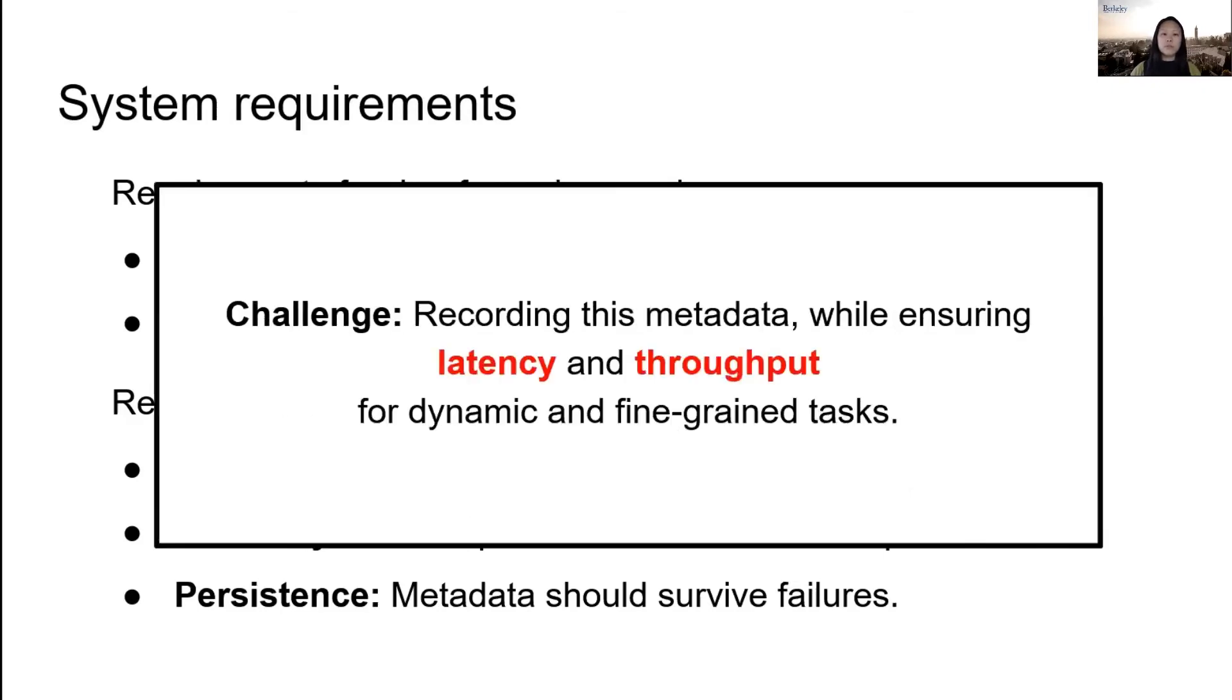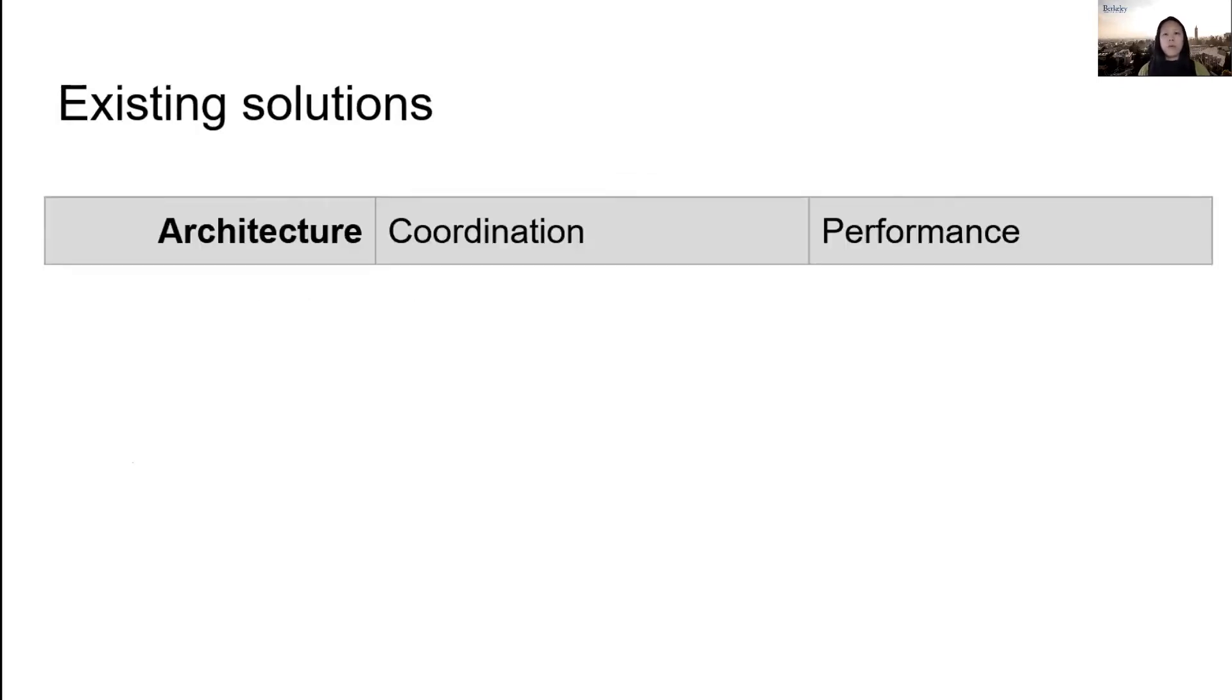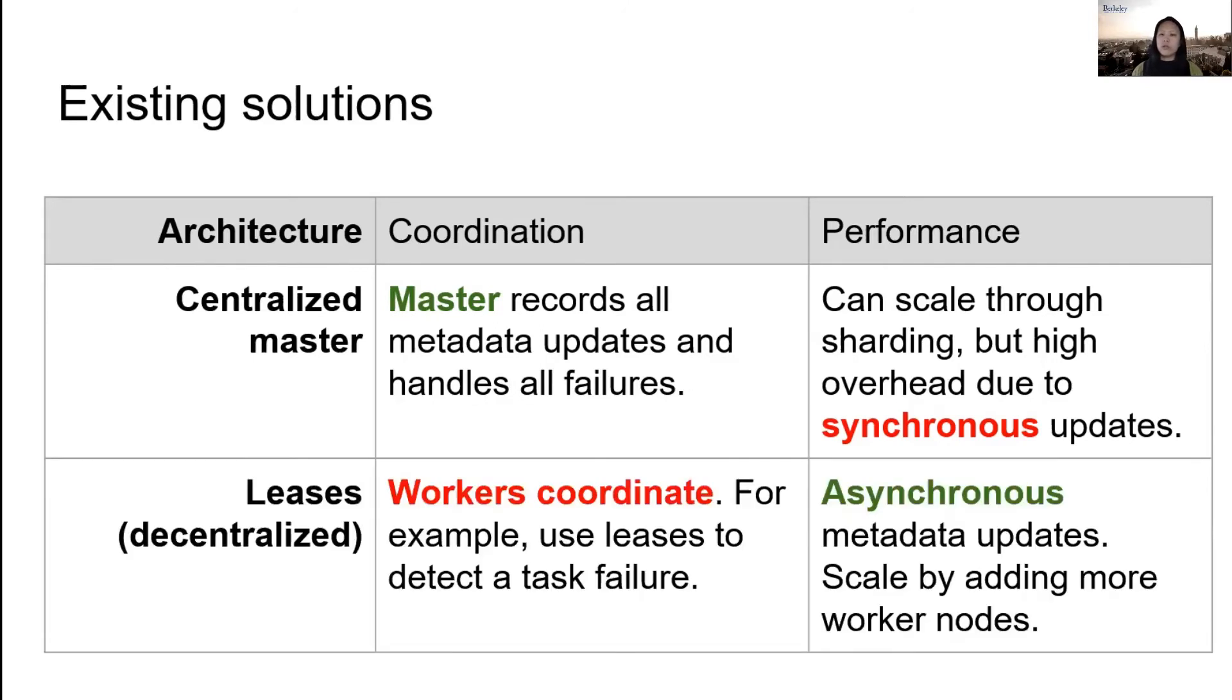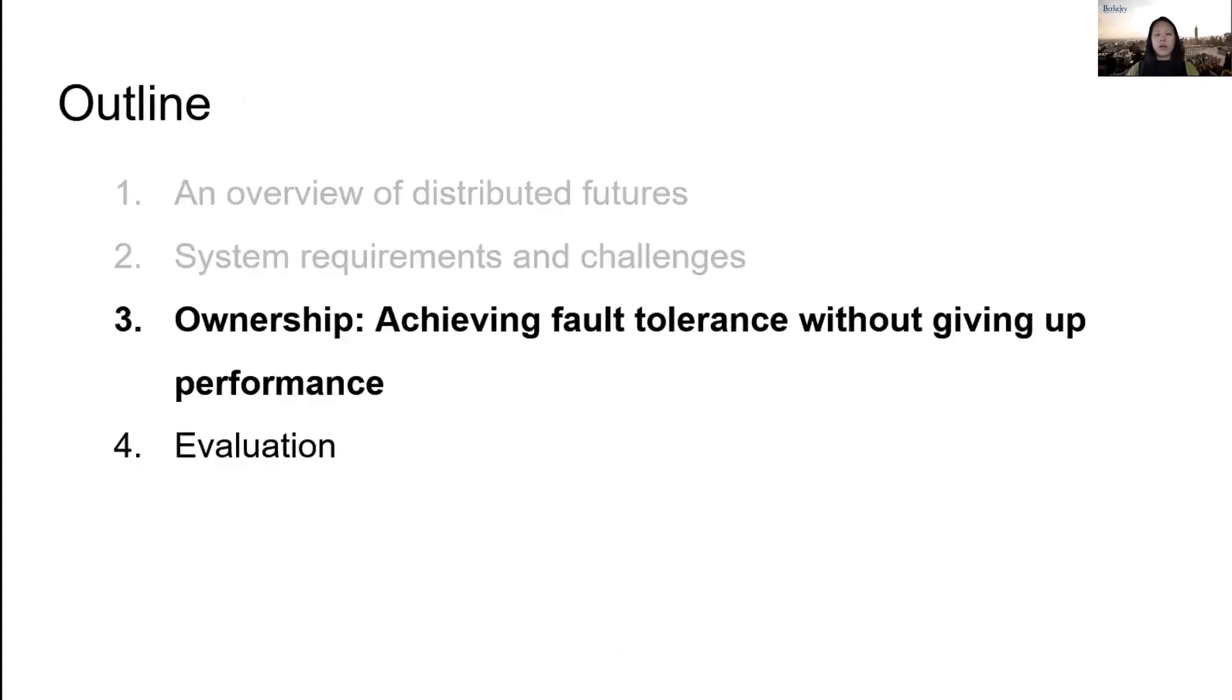Of course the main challenge is doing all of this without sacrificing latency or throughput. The most popular approach is to use a centralized master, which makes it simple to achieve correctness but also comes at the cost of performance. The obvious solution is to decentralize the system, but a naive approach can make failure handling much more complicated. And that brings us to ownership, which is a method of decentralizing the system without complicating coordination.